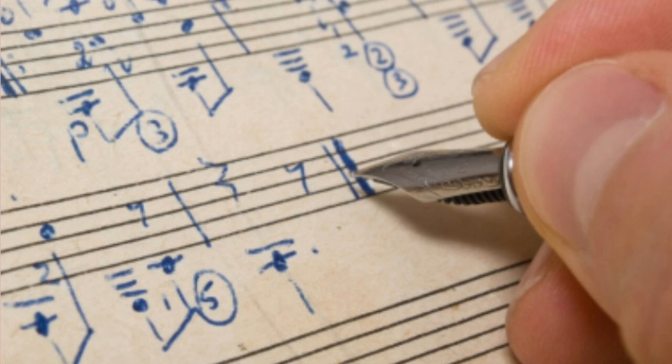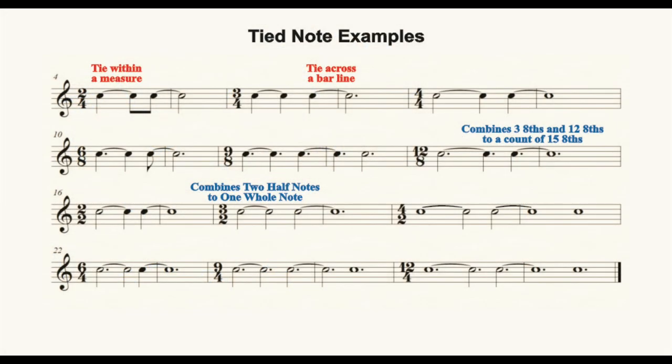Now let's talk about tied notes. Tied notes are used to combine two or more notes into a single duration. For example, as in the illustration, second staff, last measure, in 12/8 time we can use a tie to combine a dotted quarter note and a dotted whole note, giving us a total count duration of 15 eighth notes.